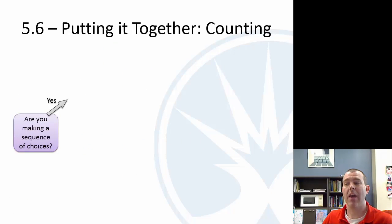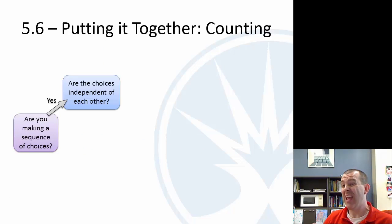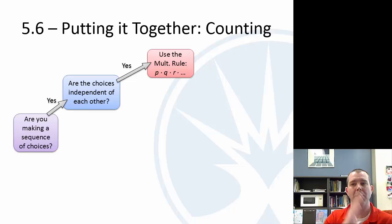All right, now for counting. Are you making a sequence of choices? Are they independent of each other? If they are, then you just use the multiplication rule—multiply, multiply, multiply.